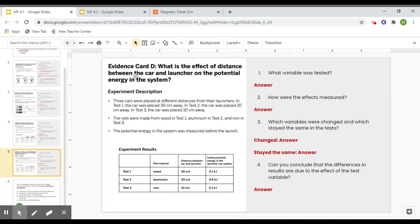And same thing here, the variable we are trying to isolate is the distance between the car and launcher, so that should be the only thing changing per test minus of course the results that will obviously change per test.